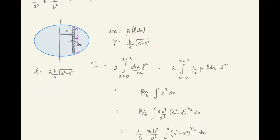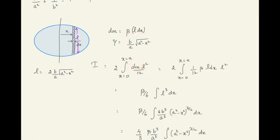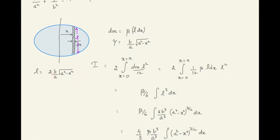Now see how the integration is set up. We integrate for x varying from 0 to a, covering one half of the elliptical plate, then multiply by 2 to get the entire moment of inertia about the major axis. The moment of inertia for a small strip is dm·l²/12, integrated from 0 to a and multiplied by 2. We convert everything to one variable: dm becomes β·l·dx, with l expressed in terms of x.